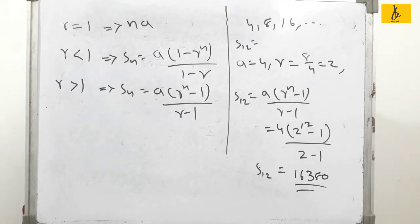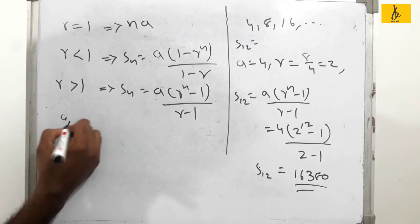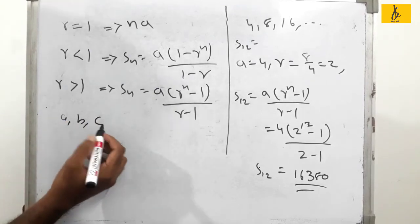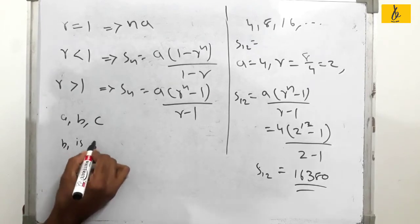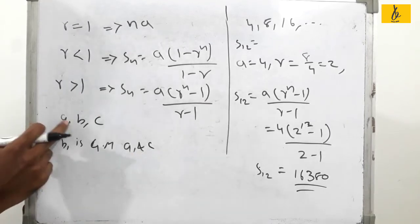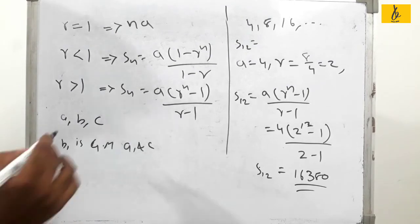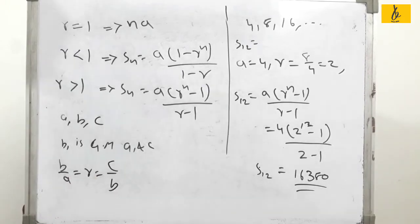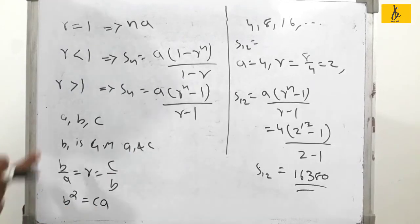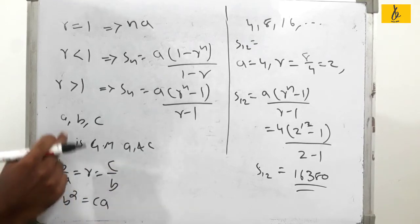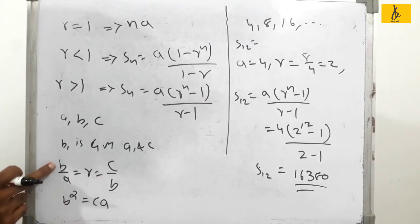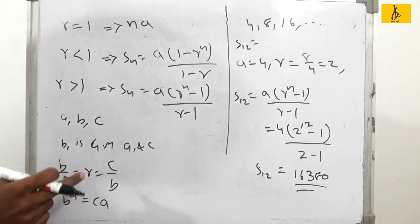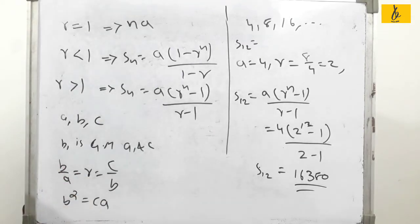Next, we call it Arithmetic Mean and Geometric Mean. If a, b, c are in Geometric Progression, then b is the Geometric Mean of a and c. This means b by a equals r equals c by b, so b squared equals c times a. This is the formula for Geometric Mean.